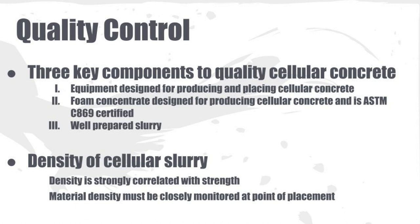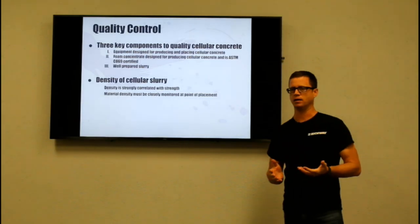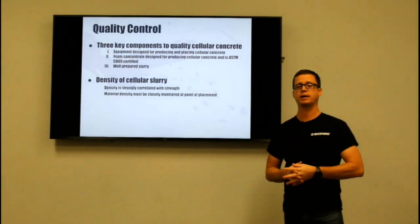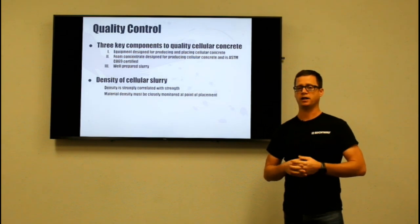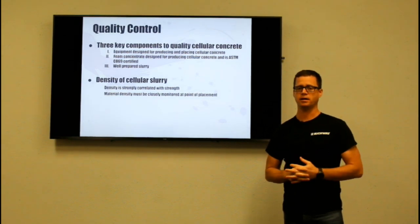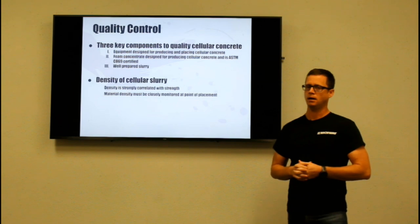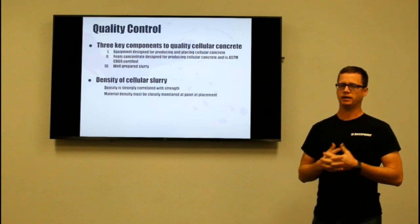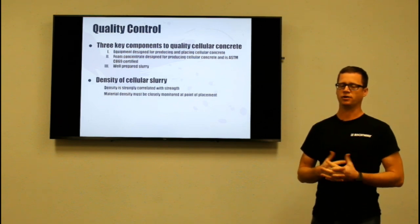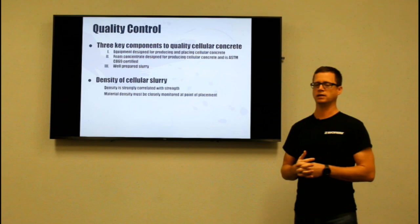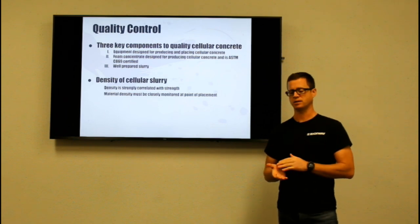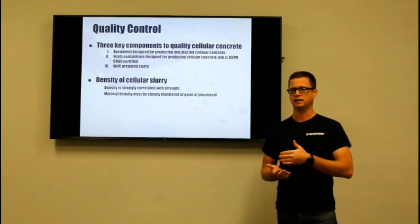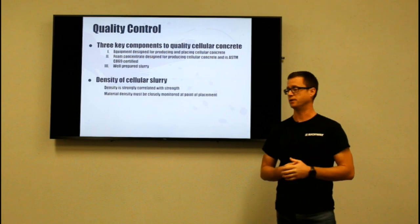The second key component is foam concentrate designed for producing cellular concrete that is ASTM C869 certified. I often tell people you could take palm oil and dish soap, run it through one of our machines, and it's going to make great-looking foam — but if you tried to introduce that into a slurry and make cellular concrete with it you're not going to have good success. It's very important that you use a foam that's designed to withstand the production process all the way from mixing through pumping and the set of the material.